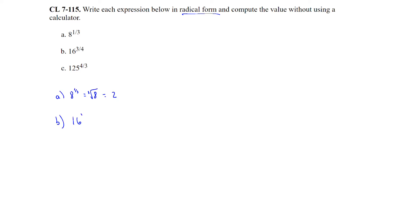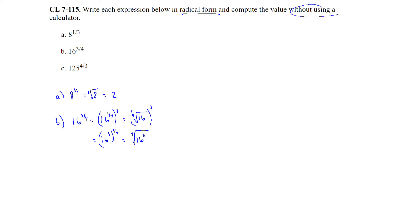Part B: 16 to the 3/4. We can rewrite it two ways: 16 raised to the 1/4, then cubed — that's the 4th root of 16, then cubing the result — or 16 cubed, then the 4th root. Without a calculator, the first approach is easier. The 4th root of 16 is 2, and 2 to the 3rd power is 8.